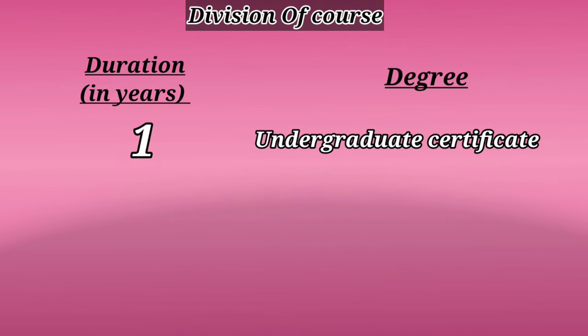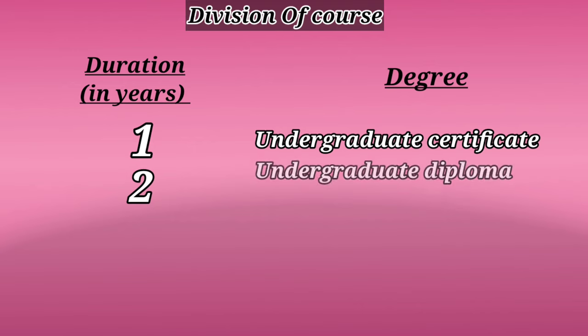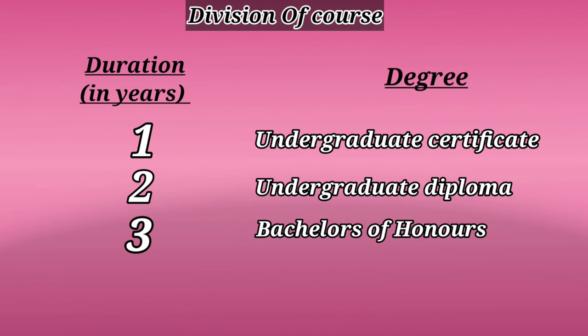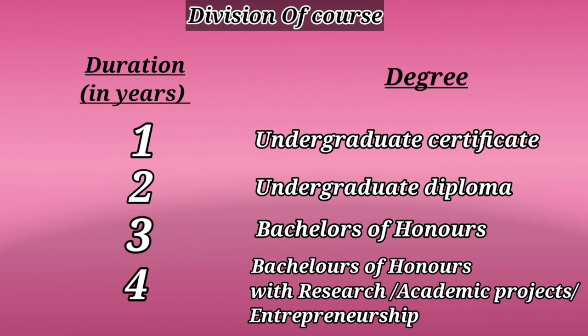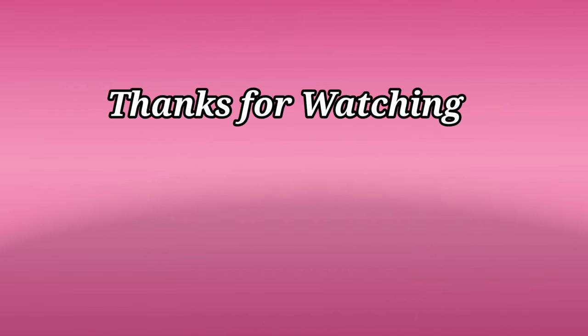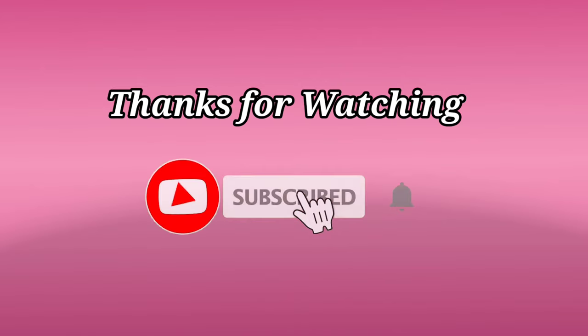Basically, if you're doing only the first year you will be awarded an Undergraduate Certificate. If you're doing the first and second year you will be awarded an Undergraduate Diploma. If you're completing three years you will be awarded a Bachelor of Honours degree. And if you're completing four years you will be awarded Bachelor of Honours with Research, or Bachelor of Honours with Academic Projects, or Bachelor of Honours with Entrepreneurship, whichever is applicable. So this was about the curriculum and the change in syllabus. Hope you liked the video — for more updates do subscribe to our channel.